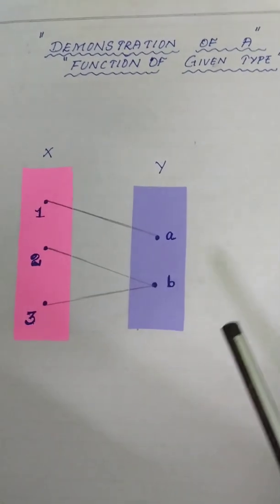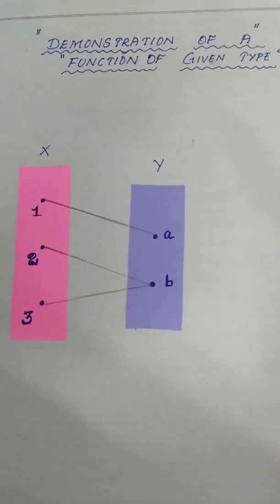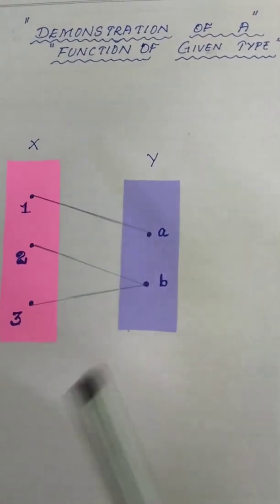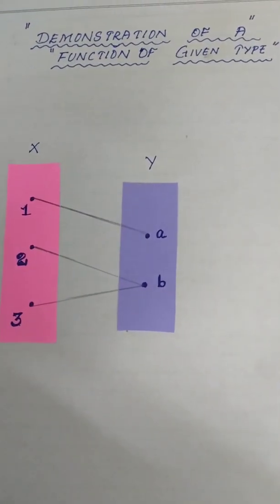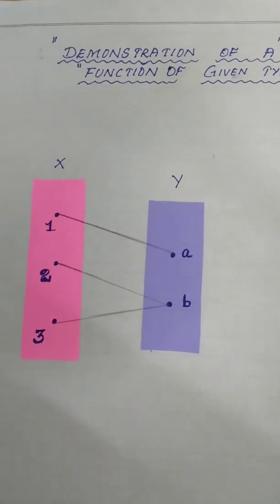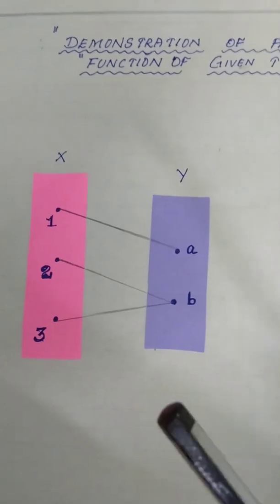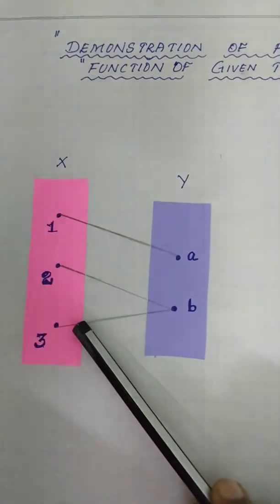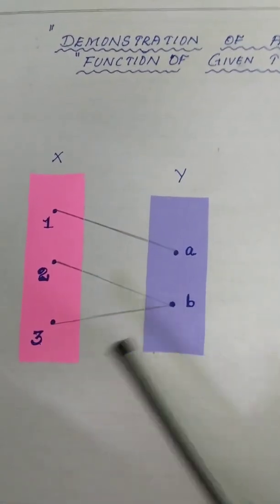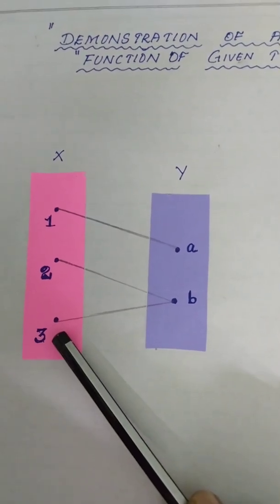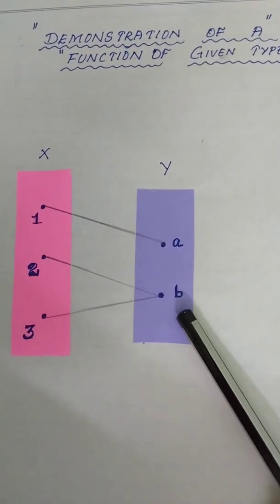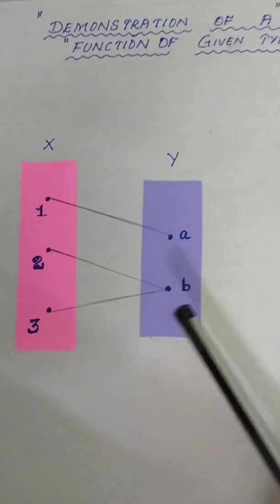So we are demonstrating — to justify our demonstration we have taken elements like this and connected like this. We have taken two sets: X is the domain, Y is the co-domain. In X we have taken the elements 1, 2, 3. In Y we have taken the elements a and b.